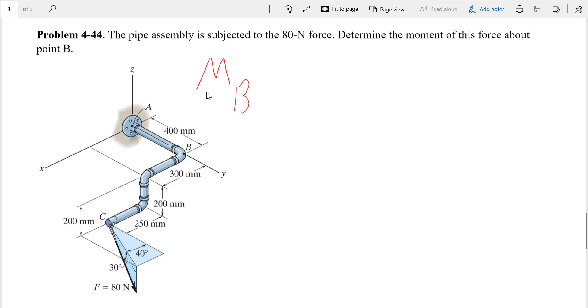Moment is a vector defined as R cross F, where R is the position vector and F is the force. Because we want to find the moment about point B, our position vector would be from B to where the force is acting, so that would be RBC. Our first task is to find the position vector from B to C.